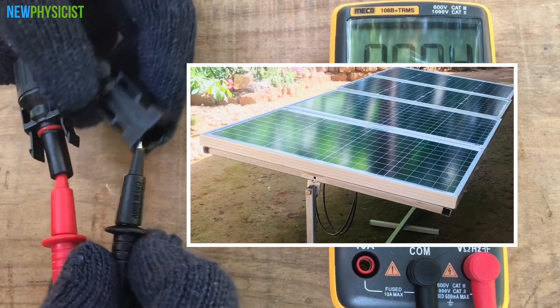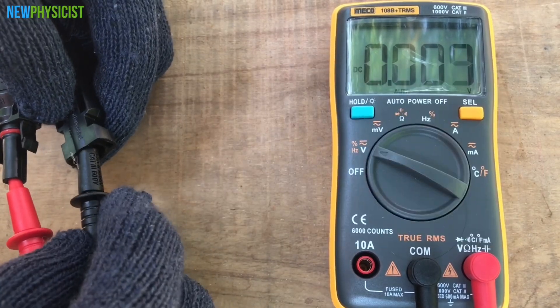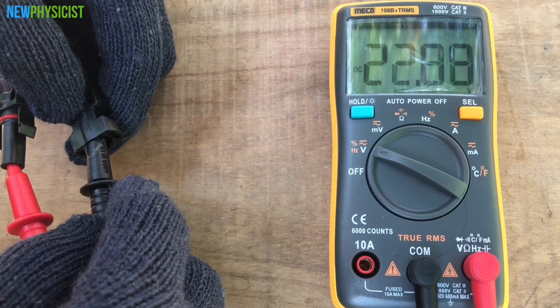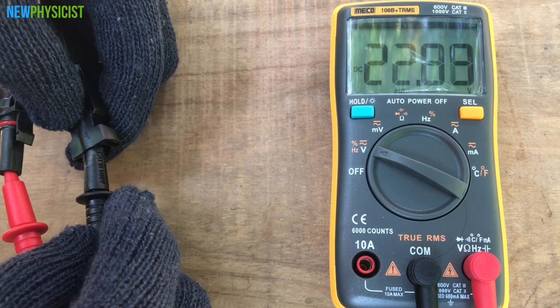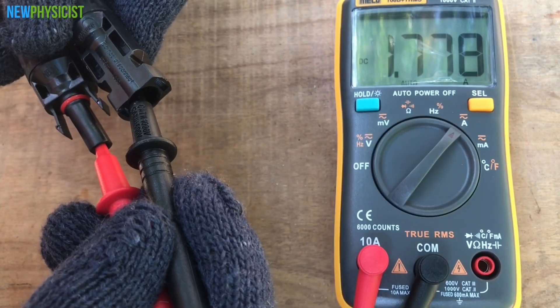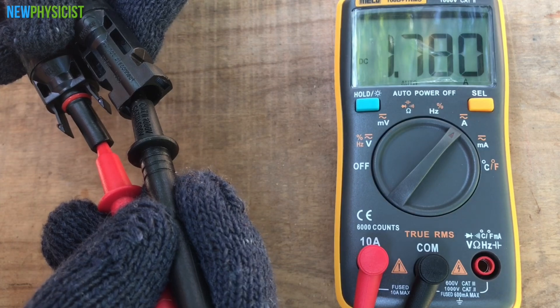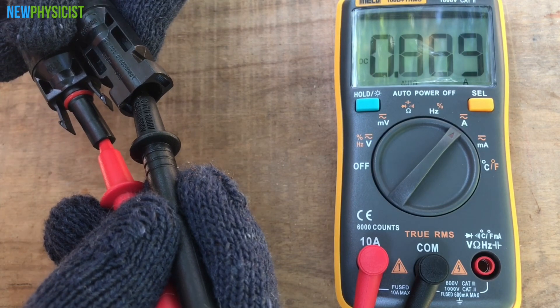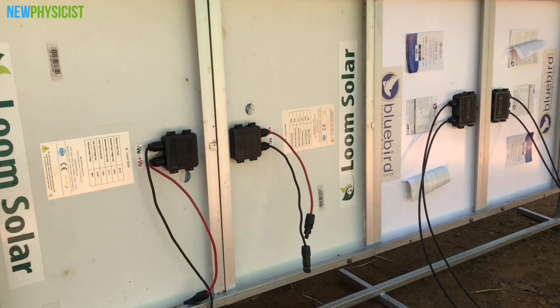Let's check the open circuit voltage and short circuit current of the individual solar panels. I'm getting 22.8 volt VOC and 1.78 amps ISC from a single Bluebird solar panel I recently bought.